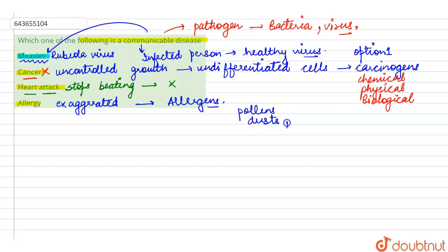And this results in certain symptoms like sneezing, difficulty in breathing, eczema, redness. So such disease can be caused. So here we see that option number one, that is the measles, is one of the pathogenic disease which is a communicable disease also.